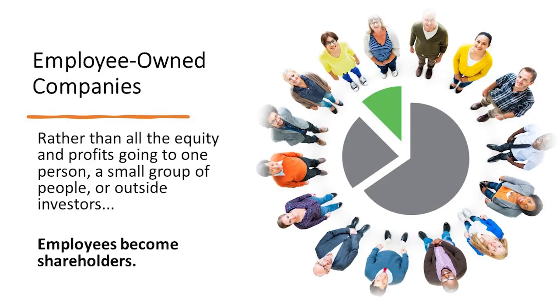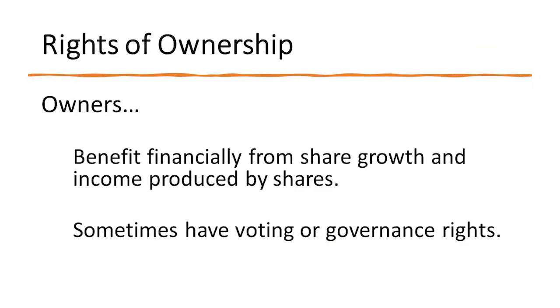Some employers have found ways to show employees that they are appreciated without incorporating ownership sharing. But unless we get at the critical issue of ownership — in employee-owned companies, rather than all the equity and profits going to one person, a small group, or outside investors, employees become shareholders. As owners, they have the right to benefit financially from the growth of their shares and from the income produced by their shares. In some, but not all, types of employee ownership, employees also have certain voting rights or governance rights. When 100% of a company's stock belongs to employees, we call that a 100% employee-owned company. A company where 51% of stock is owned by employees is a majority employee-owned company. In other companies, employees may own a much smaller percentage — for example, in stock market companies with employee ownership programs, employees may own just a tiny percentage of all shares.